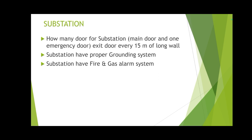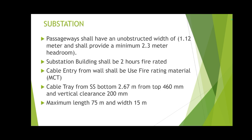The substation must have a proper grounding system — around the substation we always have to prepare one main ground grid system for electrical. The substation must also have a fire and gas alarm system: smoke detectors, heat detectors, gas detectors, and all sirens and beacons are installed outside the door of the substation. Passageways must be unobstructed, with a minimum width of 1.12 meters and no obstruction up to a height of 2.3 meters.